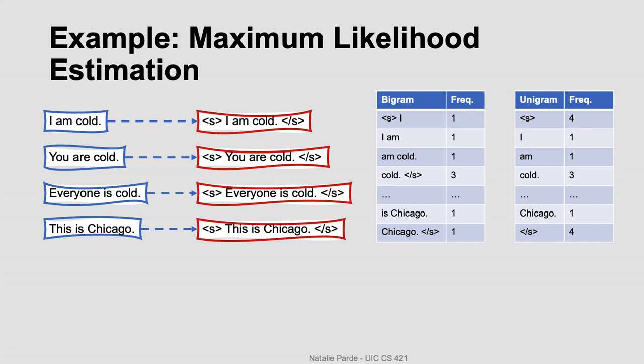We have all the information we need now to do a basic maximum likelihood estimation, so we'll go ahead and get started. We'll compute the maximum likelihood for two different bigrams for variety. One of them will be the bigram containing the beginning of sentence marker followed by the word I, and the other will be the word cold followed by the end of sentence marker. For the first, we'll just divide the frequency count for the beginning of sentence marker followed by I, which is one, by the frequency count for the beginning of sentence marker in general, which is four. This means that the maximum likelihood estimate for this bigram is 0.25.